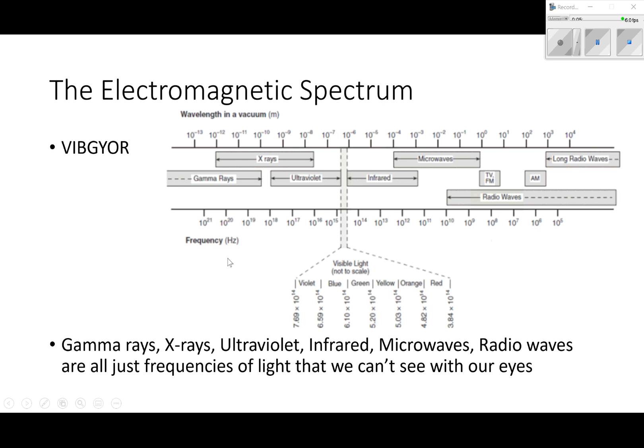If we look on the bottom of this we have frequency in hertz - it's powers of 10, 10 to the 21, 10 to the 20, all the way down to 10 to the 5. On top we have the wavelength in a vacuum: 10 to the negative 13, 10 to the negative 12, all the way down to, all the way up to 10 to the 4. So over here we have a big wavelength and low frequency. Over here we have big frequency and small wavelength. Gamma rays, x-rays, ultraviolet, infrared, microwaves, radio waves - they're all just frequencies of light we can't see with our eyes. They're all just different colors.